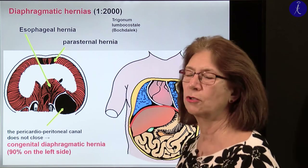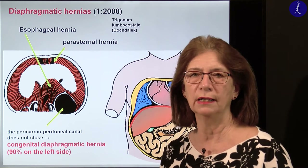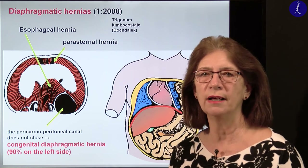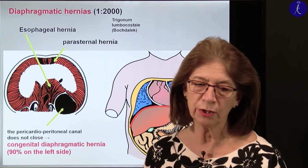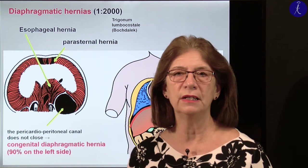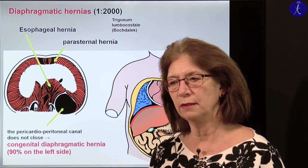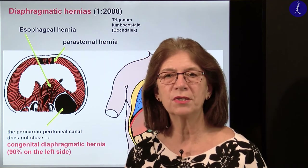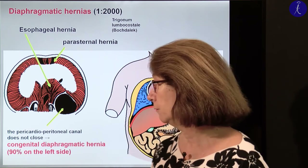Esophageal hernia happens in the territory around the loop surrounding the cardiac region. This usually is not a malformation at birth — because of the looseness of this loop, it happens later in life and may cause serious problems to the patients. Sometimes, if it's pinched in, it may imitate the symptoms of a heart infarct.